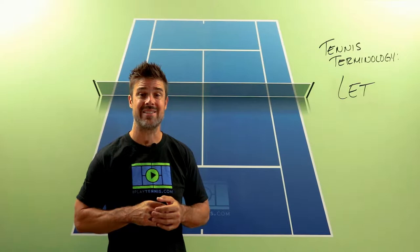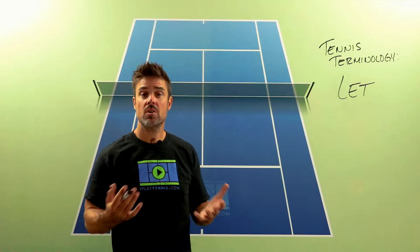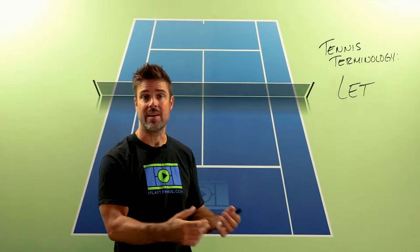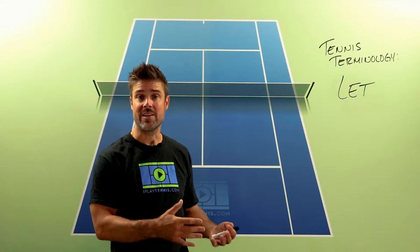So let — there are a couple of different things we can talk about. The first is a service let. That's when I'm serving, the ball hits the net and lands in the box. It hits the net, goes over, lands in the box — that is a service let and I get to redo that serve. If it hits the net and goes out of the box, it's just a fault like any other missed serve. But if it hits the net and goes into the box, I get to redo that serve. If it was my first serve, I get my first serve again; second serve, I get my second serve again. That is a service let.